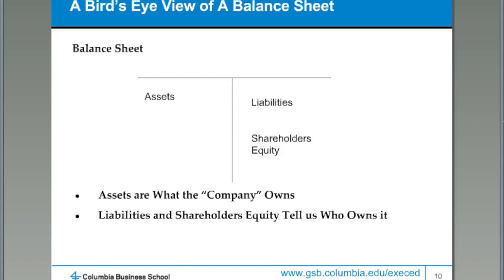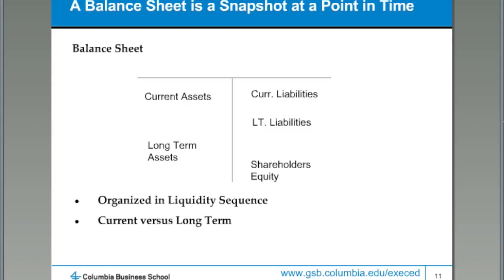As the name suggests, the balance sheet has to balance. Someone somewhere owns everything that is inside a company — all the assets have to be owned by somebody, either the people that we borrowed money from or the people who invested the money to start the company. So assets have to equal liabilities and shareholders' equity. Balance sheets are arranged in what we call a liquidity sequence. There are two types of assets: current assets and long-term assets. Current assets are assets that can be converted to cash within a year. The most liquid asset in a company is obviously the cash that the company has, but most companies put all their money into less liquid things — buildings, factories, receivables, inventory.